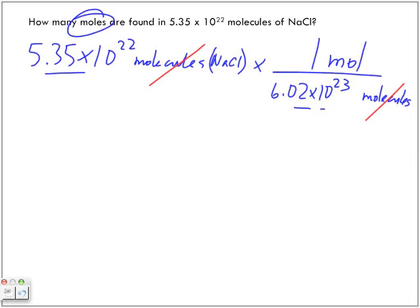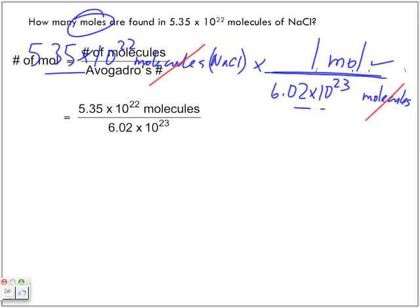We're going to multiply 5.35 times 10 to the power of 22 by 1 and then divide it by 6.02 times 10 to the power of 23. And we end up getting 0.089 mole of NaCl.